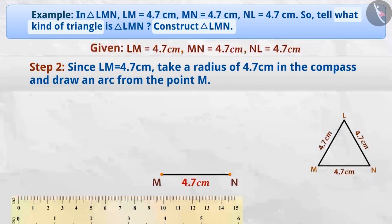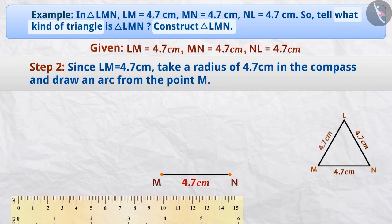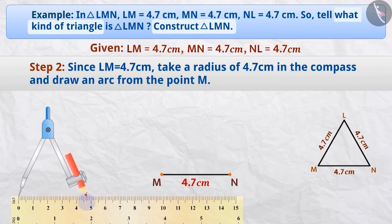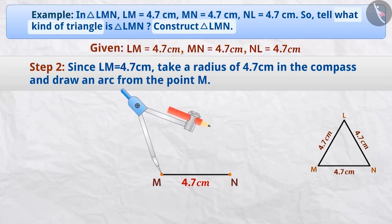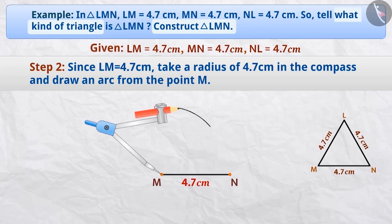Step 2: From the question, we know that point M is at a distance of 4.7 cm from point L. Now, taking a radius of 4.7 cm on the compass and taking point M as the center, we will draw an arc. Point L is situated somewhere on this arc.